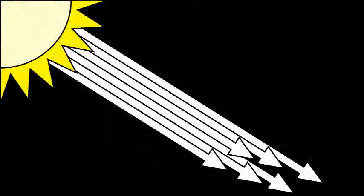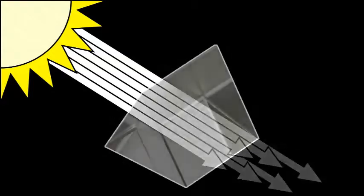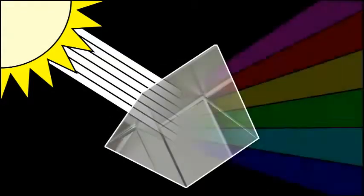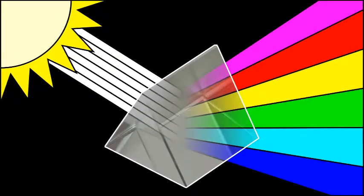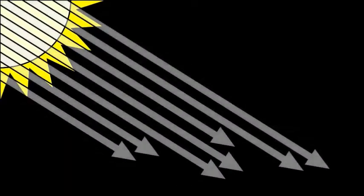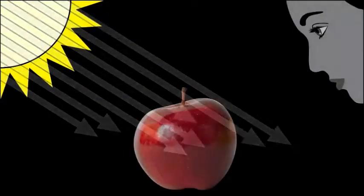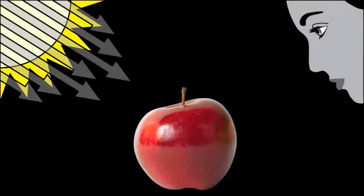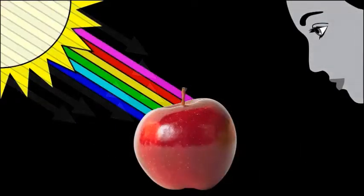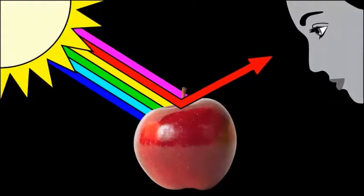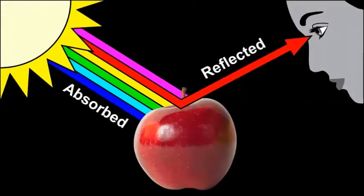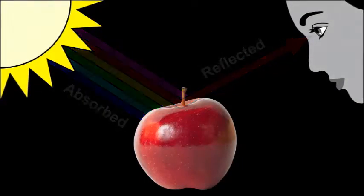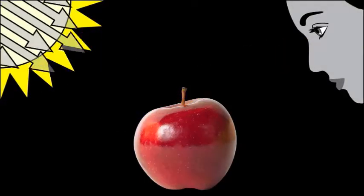We can use a prism to separate the colors in light. The objects that we see absorb some colors and reflect others. Reflected colors determine the colors of objects that we see around us.